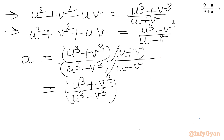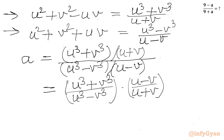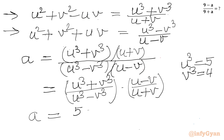So this will become u cubed plus v cubed over u cubed minus v cubed, times u minus v in the numerator over u plus v. Now u cubed was 5 and v cubed was 4. So I can write A will be equal to 5 plus 4 over 5 minus 4, times u minus v over u plus v.